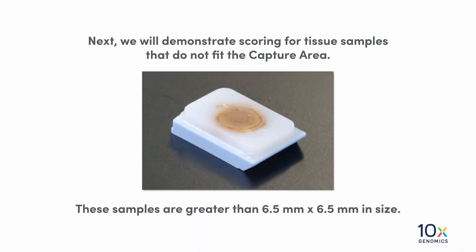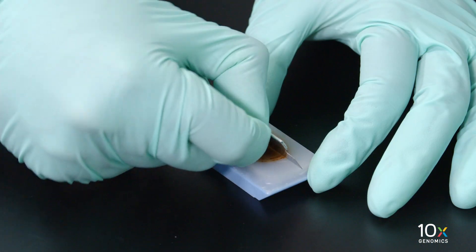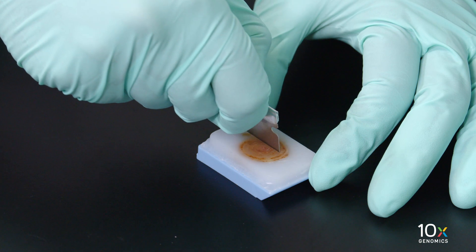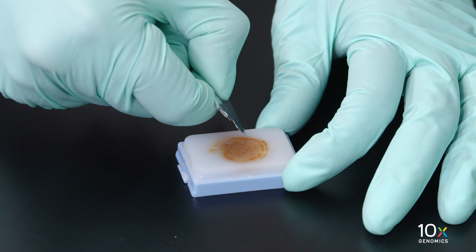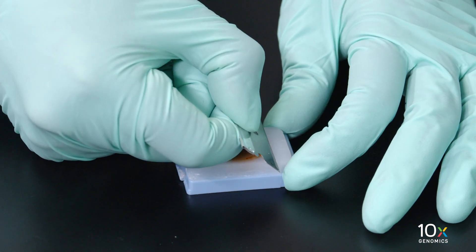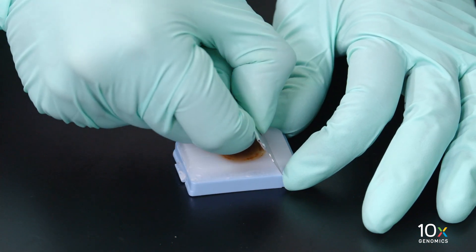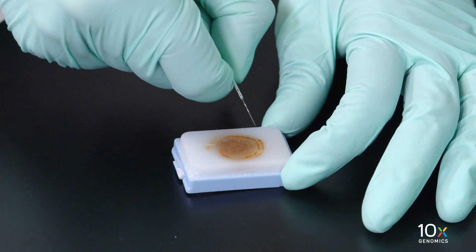Next, we will demonstrate scoring for tissue samples that do not fit the capture area. These samples are greater than 6.5 millimeters by 6.5 millimeters in size. In order to generate a smaller sample, we can score the tissue block with a razor blade. Remove the tissue block from the microtome and glide a razor blade over the surface of the tissue to introduce a shallow cut. The incision should be shallow — a deep incision may lead to tissue damage and disintegration.